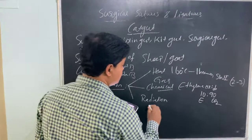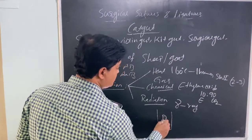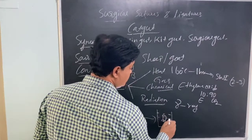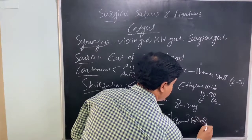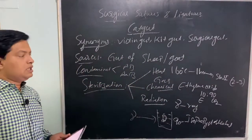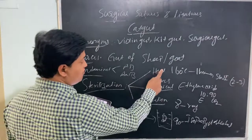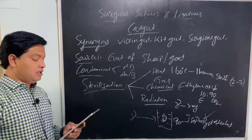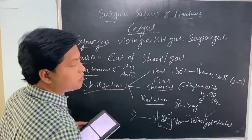The third sterilization method is radiation — specifically gamma radiation. The catgut should be dipped in 90% isopropyl alcohol during gamma irradiation. Among all three methods, radiation is the most preferred method for catgut sterilization.